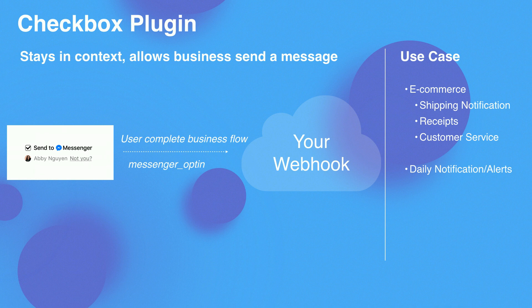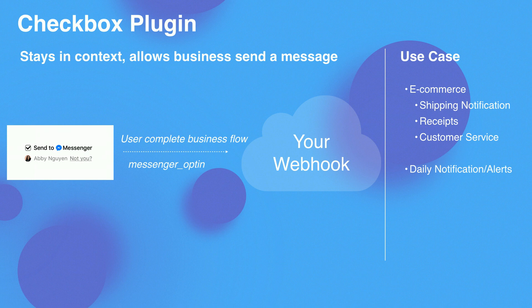The main difference between Checkbox and Send to Messenger plugin is: with Send to Messenger, you have to click on the plugin itself and finish the opt-in flow from there. But with Checkbox plugin, you build this plugin into your business flow — users just need to finish your business flow on your website and will be automatically opted in as long as they check the checkbox. We will send you the same Messenger opt-in event to your webhook once a user opts in. Use cases are very similar to Send to Messenger — businesses use it for e-commerce shipping notifications, receipts, and daily location alerts.